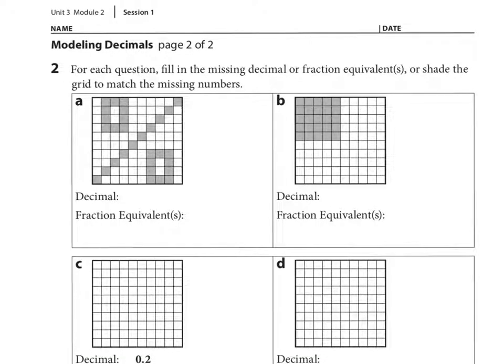For number two, it says, for each question, fill in the missing decimal or fraction equivalent or equivalents, or shade the grid to match the missing numbers. So looking at this grid, what would be the decimal and what would be the fraction equivalent?